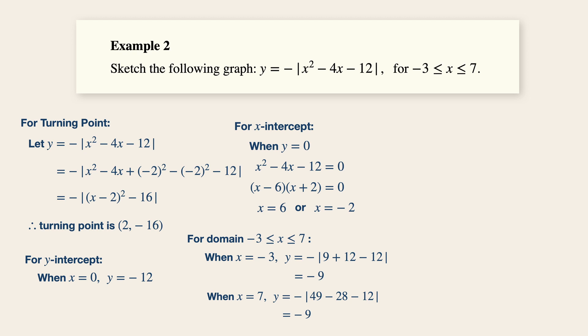Now, with all these data over here, quickly sketch out the axis of the graph and mark out first the turning point of the graph, which is 2 and minus 16 at the bottom. And the y-intercept, which is minus 12, include also the x-intercepts, which is minus 2 and 6.